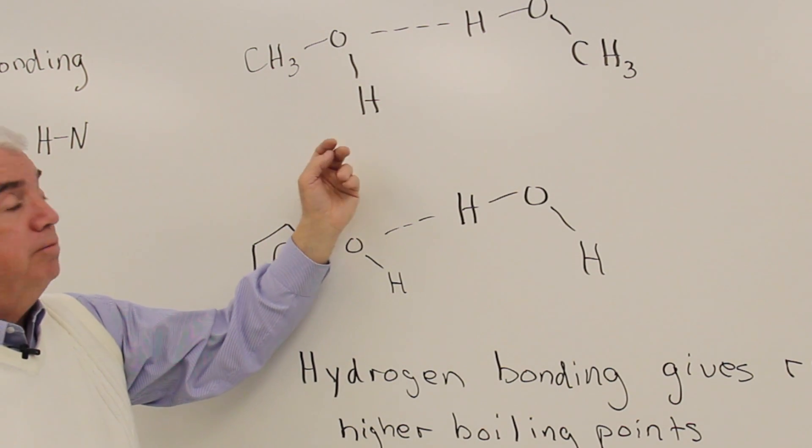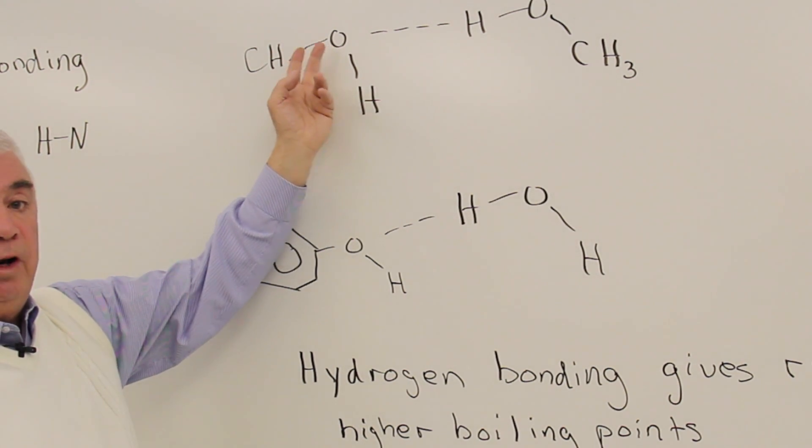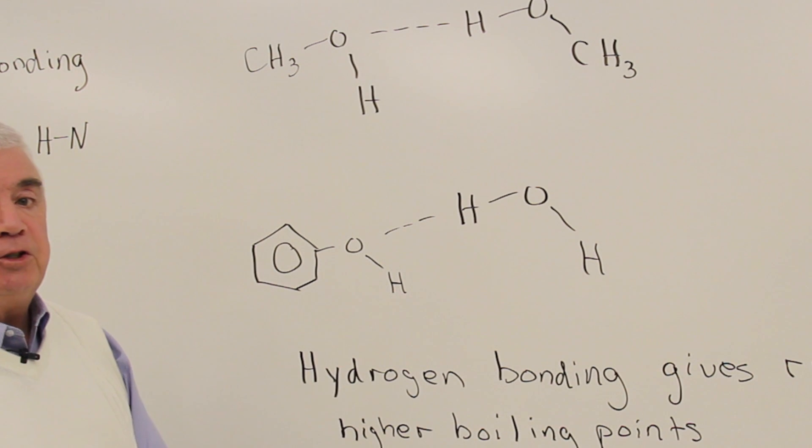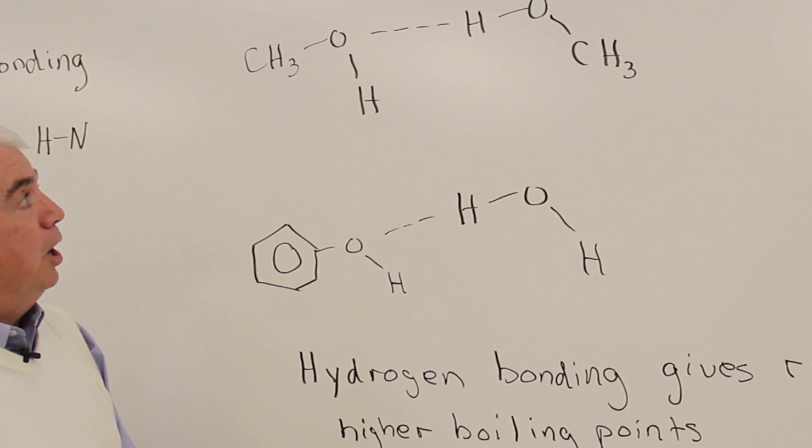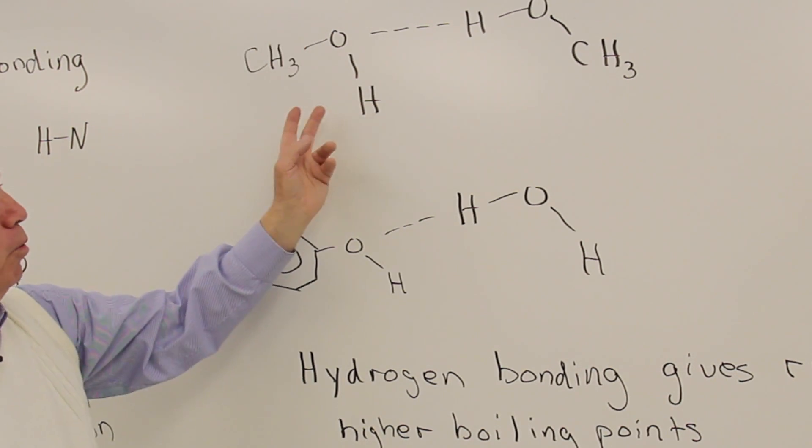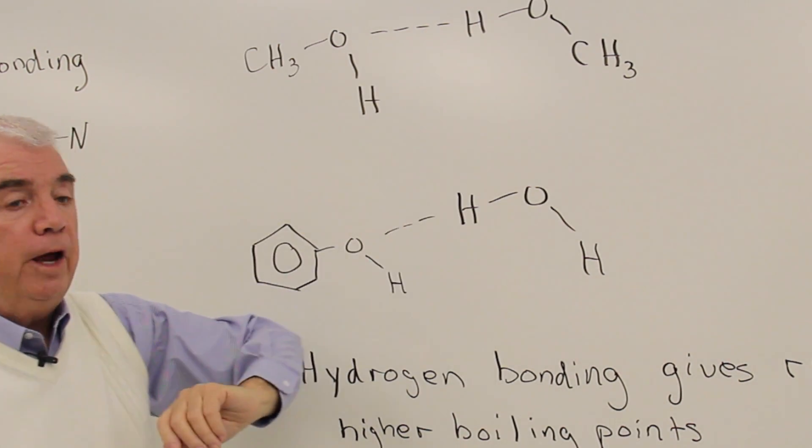We have the requirements for hydrogen bonding. We've got a hydrogen, and it has to be attached to an oxygen. Hydrogens that are attached to carbon don't give rise to hydrogen bonding. So we've got the requirements. A molecule here, and a molecule over there.